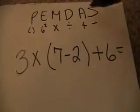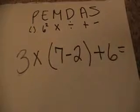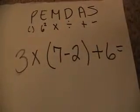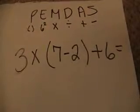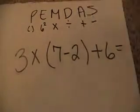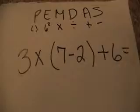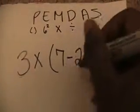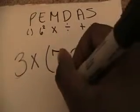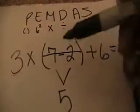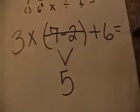We look at the problem and we first refer to PEMDAS, asking ourselves: are there any parentheses? Yes, there are parentheses. So the first step is to solve whatever is in those parentheses. We take seven minus two and draw an arrow down. Seven minus two equals five. Now I'm done with whatever is in the parentheses, and I need to bring down all the other parts of the problem as I rewrite the question.